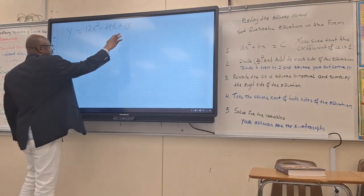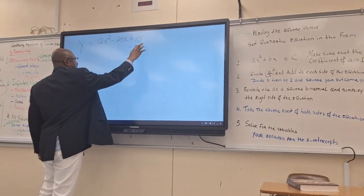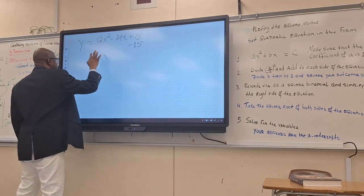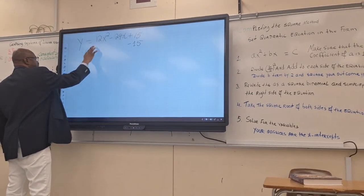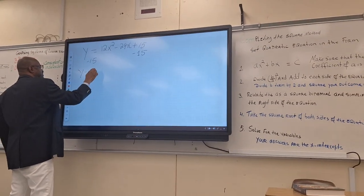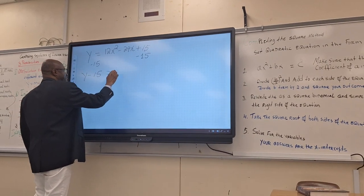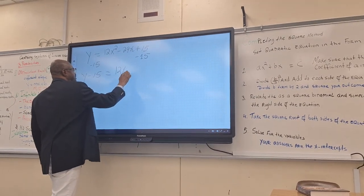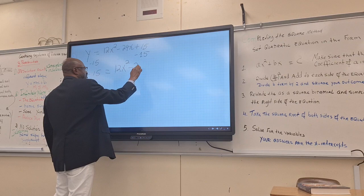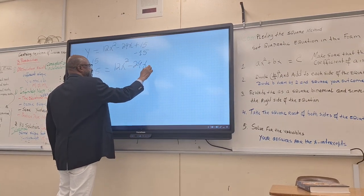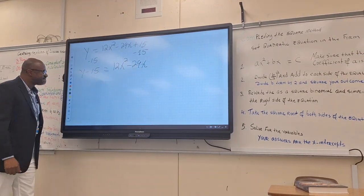Subtract 15 on both sides. Subtract 15. You got to pay attention. The fractions are coming. So we're going to end up with y minus 15 equal 12x squared minus 29x. So pass it up.